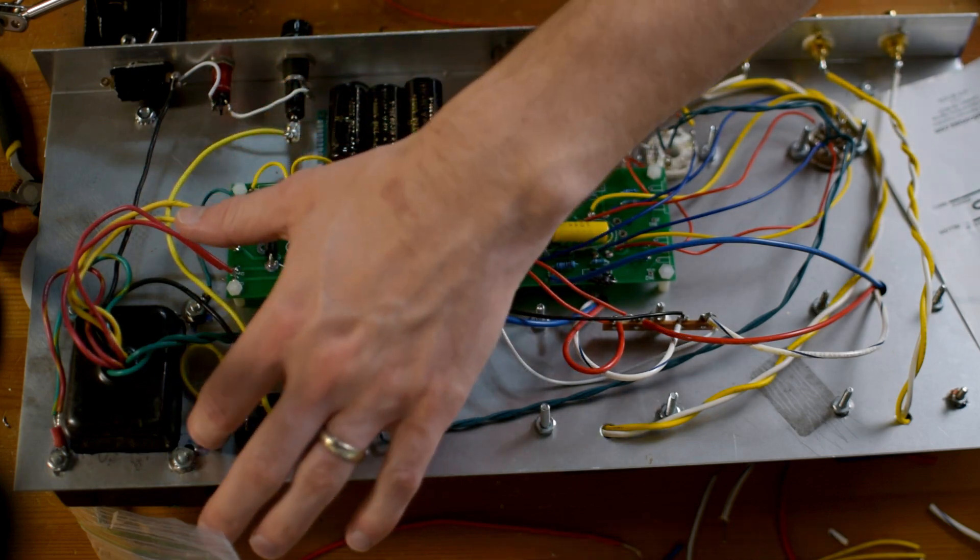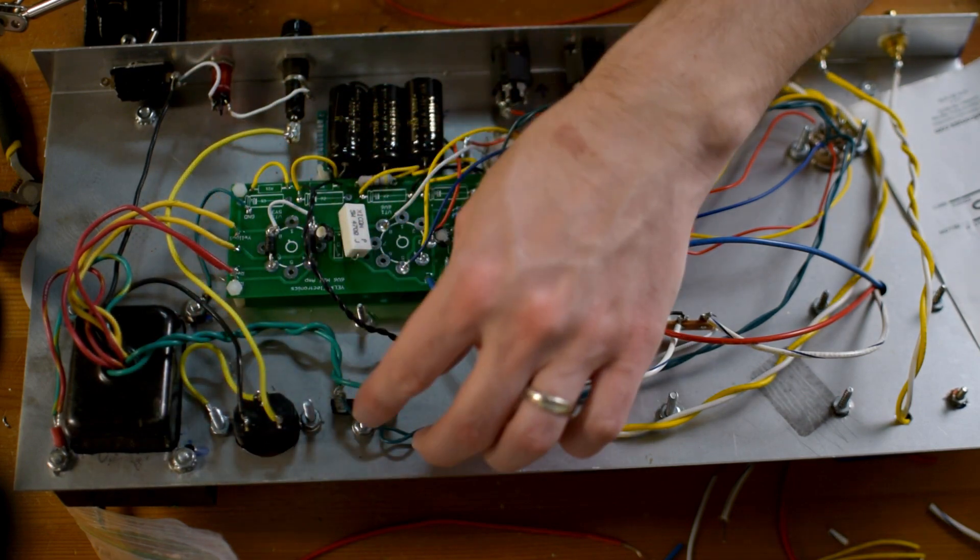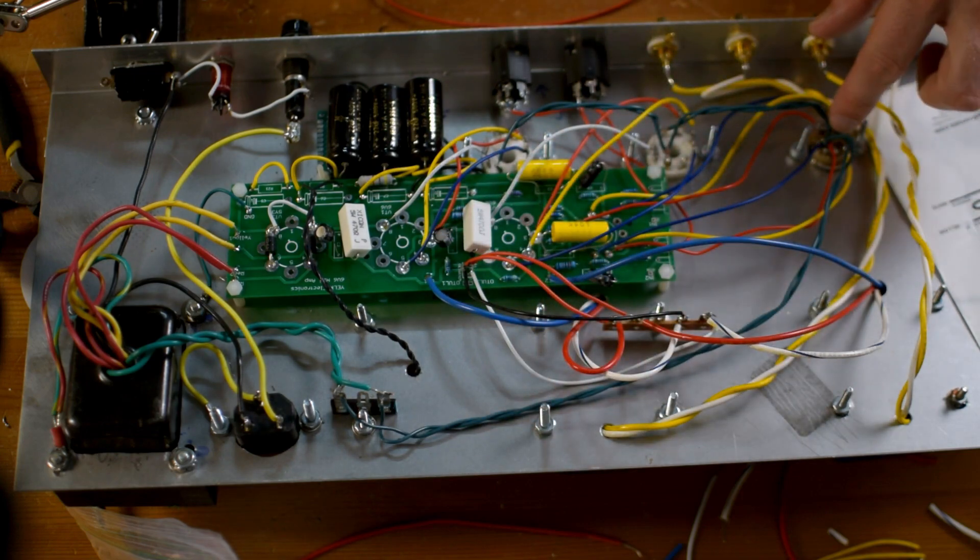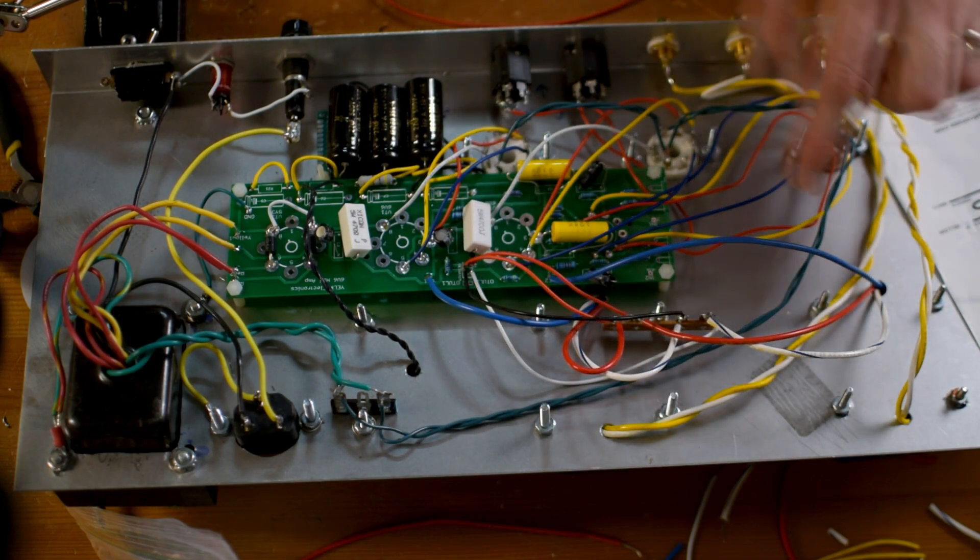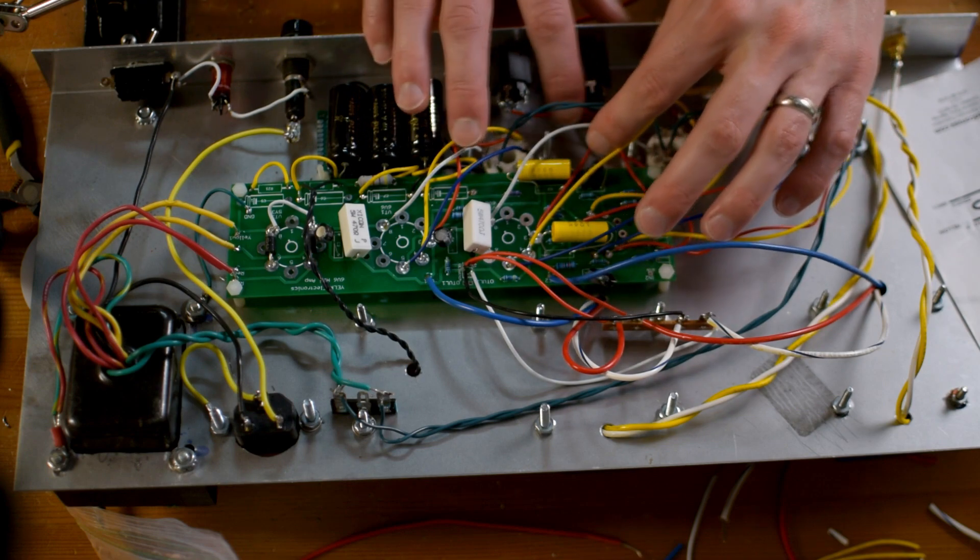So earth ground is bolted to the chassis, we're good to go. We've got our 6.3 filament windings here that are going to this terminal strip and then it's going here to these tubes. The tightly twisted pair, elevated a little bit to try to kind of keep them away from the rest of the signal wires.